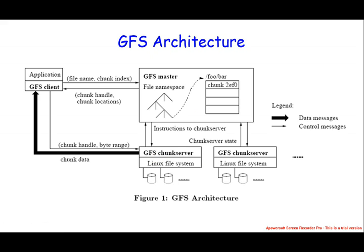Why do we need replication of GFS chunk servers? Because the hardware used is very cheap and will inevitably fail. To ensure scalable and available data, data chunks are replicated across more than one chunk server. Each 64-megabyte chunk is stored on more than one chunk server — typically copied to two additional chunk servers, giving three total — and this replication factor is configurable.